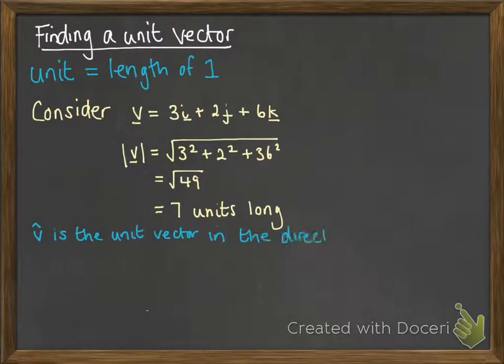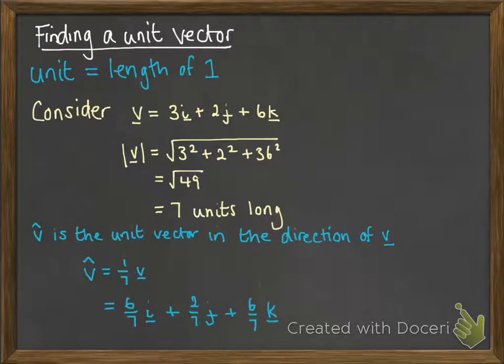This v with a little hat on it is how we denote that it's a unit vector in the direction of the vector v. So it's going to be 1/7th of v. Then you just divide each of those parts of i, j and k by 7.